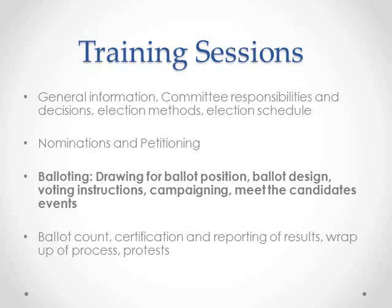Today we will be discussing what happens once the petitioning or application period in your local or unit has ended. This segment of the training is relevant for locals and units where you have at least one race for office — not all of your positions to be elected were filled without opposition at the close of your nomination period. You have at least one office for which there is more than one candidate. We will cover what needs to happen when you have to have balloting or voting before your process will be complete and you can report your results.